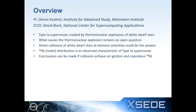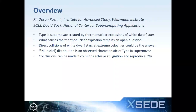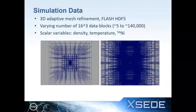The basic science behind this is that Type 1a supernovae are created from explosions of white dwarf stars, but what causes the explosions is the big question. They think that direct collisions of white dwarf stars at very high velocities could be the reason for these thermonuclear explosions.